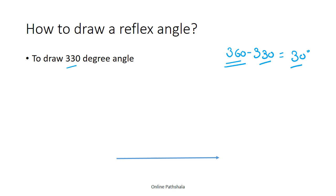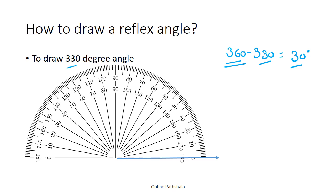Place the center of the protractor on one of the endpoints. Now we measure: 0, 10, 20, 30. At this point we draw a 30 degree internal angle. This 30 degree internal angle means the outer region will become our 330 degree reflex angle.